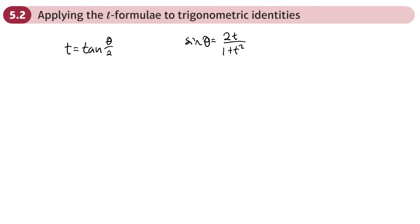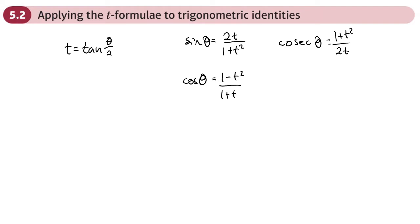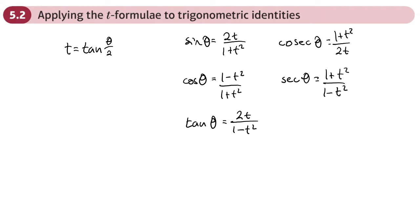Now we'll do the reciprocal of that which is cosec, so that will be 1 plus t squared over 2t. Similarly, cos θ equals 1 minus t squared over 1 plus t squared, which we've derived already. So sec θ is the reciprocal: 1 plus t squared over 1 minus t squared. And tan θ is 2t over 1 minus t squared, so cot θ is 1 minus t squared over 2t.